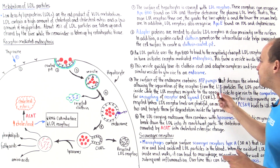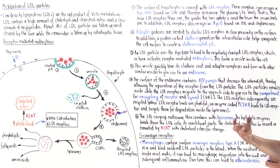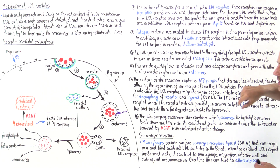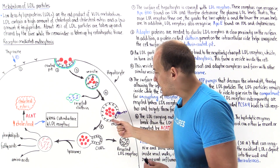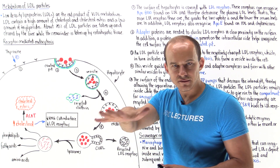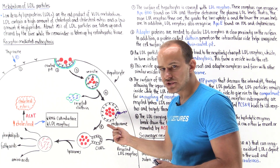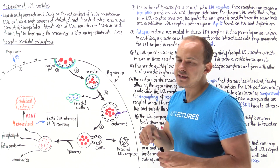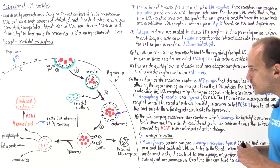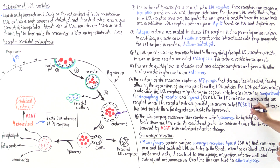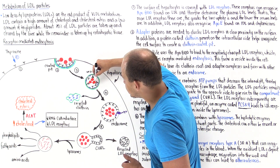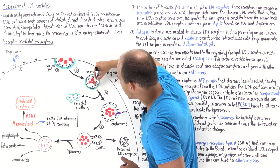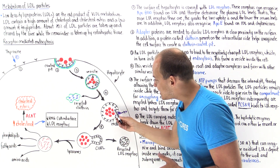On the surface of the endosome, we have an ATP pump. The ATP pump hydrolyzes ATP and brings H+ ions into this structure, decreasing the pH inside to about 4 to 5 — the acidity increases. Now, we have an important enzyme inside the cell known as PCSK9. This PCSK9 is an enzyme that can actually bind onto this LDL receptor-LDL complex and prevent the dissociation of this complex.